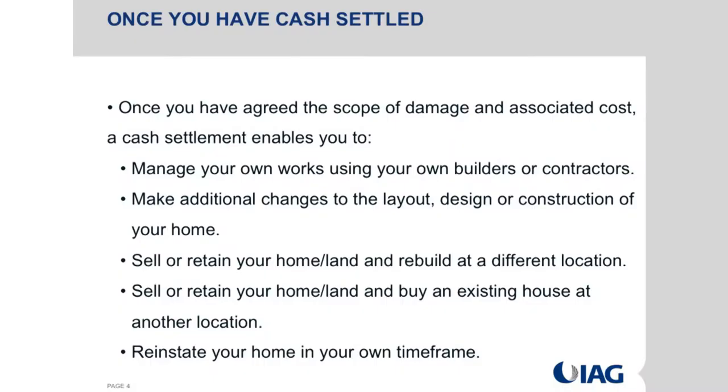Cash settlement allows you to make additional changes. Because insurers need to have time frames around their rebuild and repair programs, most insurers say if they're managing your reinstatement they will manage exactly what you had but won't allow you to make any changes. As a homeowner that's sometimes against the best outcome for you - if you've been living in a big five-bedroom house, you now have the opportunity maybe to go to a higher-spec three-bedroom house because your life circumstances have changed. So we'll work with you to quantify the loss and pay the cash settlement so that you can make those changes.